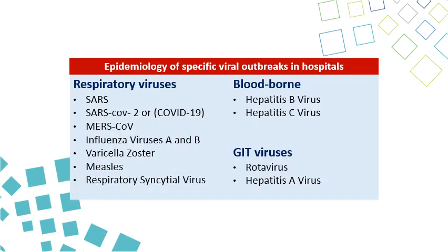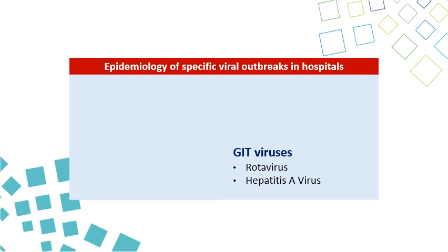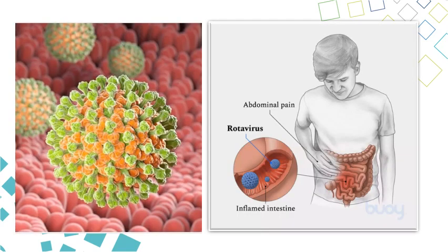We have now finished respiratory viruses and blood-borne viruses. For the last group, we turn to GIT viruses, including rotavirus and hepatitis A virus. In this section, we will talk in detail about rotavirus and hepatitis A virus. Rotavirus is a major cause of diarrhea in pediatric patients and can cause outbreaks in the hospital in certain populations.